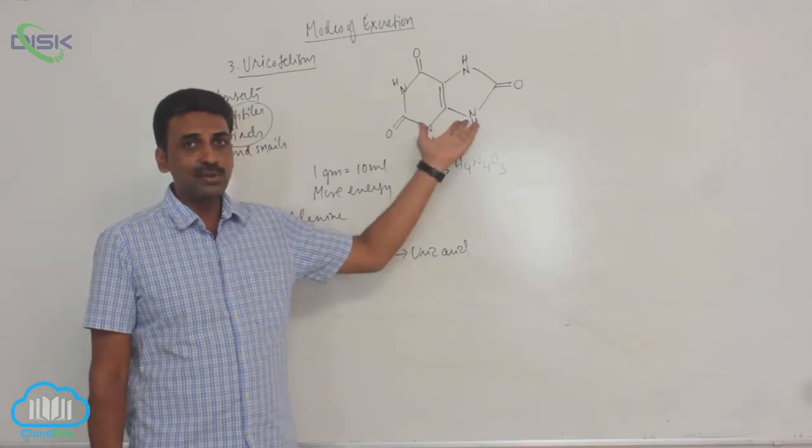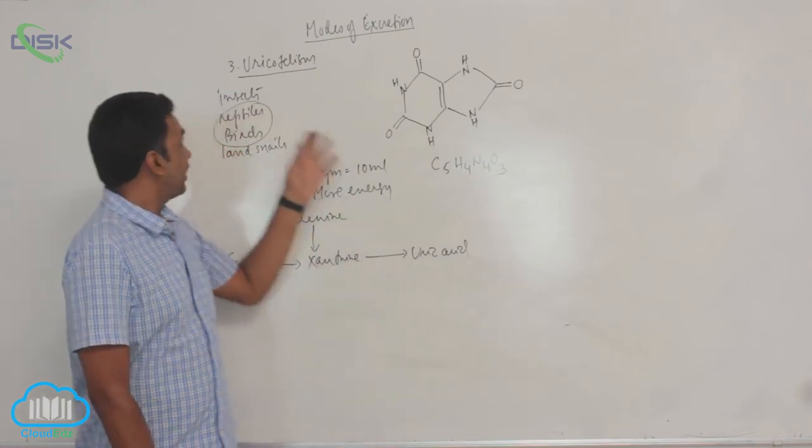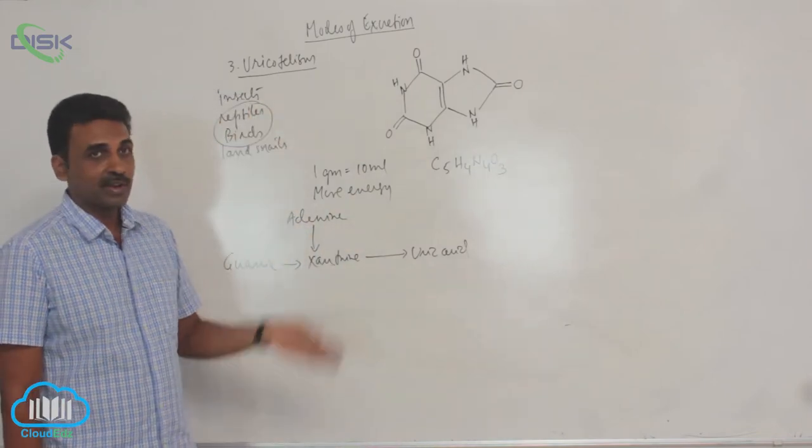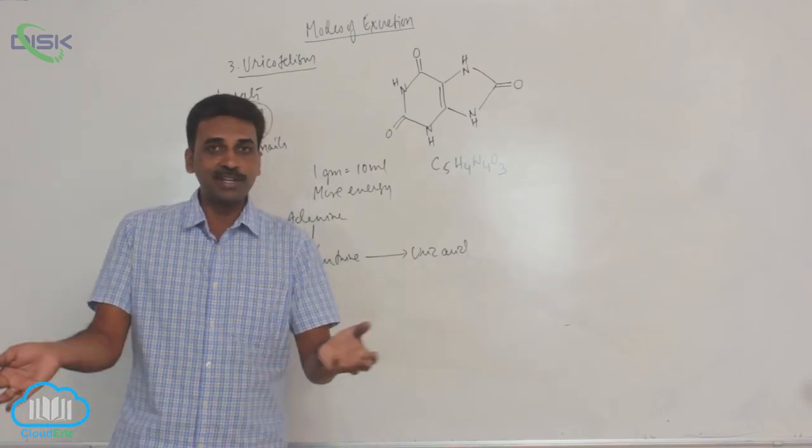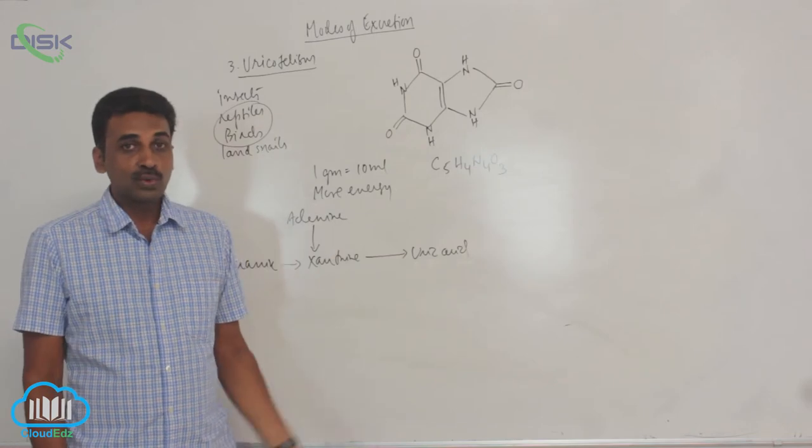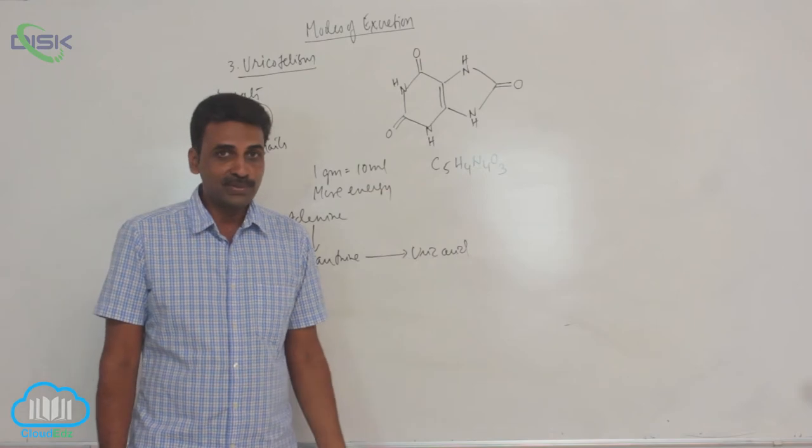Uric acid synthesis occurs inside the liver. In tracheal arthropods, when I say tracheal arthropods, it includes insects, centipedes, millipedes, all that. So in that group, the formation of uric acid occurs inside Malpighian tubules.